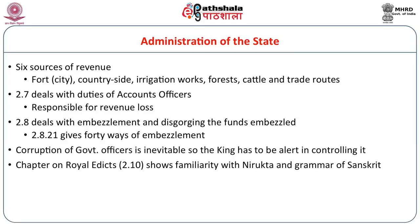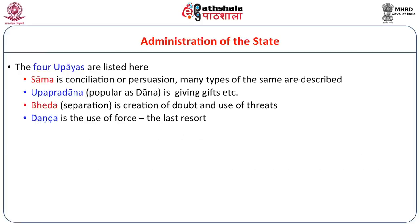Corruption of government officers has been recognized as inevitable, so the king is advised to always be in control. There are also chapters on royal edicts, which shows that Arthashastra is familiar with Nirukta and Vyakarana — the two Vedangas — giving us the relative dating of Arthashastra. Then the four Upayas are dealt with. An Upaya is a device used to achieve a purpose and then removed — like scaffolding that we build before building the building and remove once the building is ready.